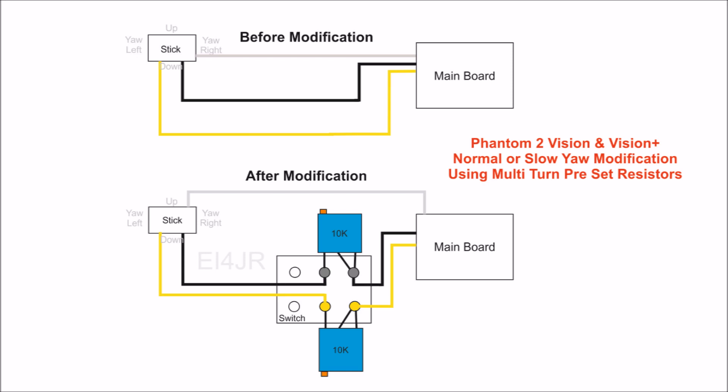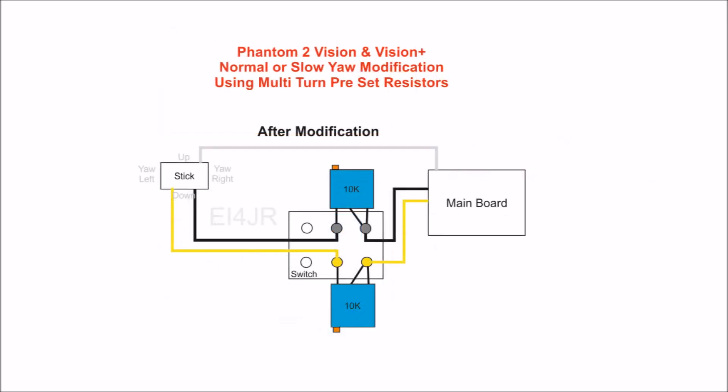You can see here in the after modification diagram where we break into the yellow and black wires from the stick to the main board and insert a small switch with the 10k multi-turn preset resistors.